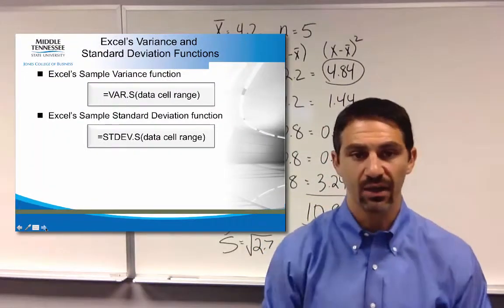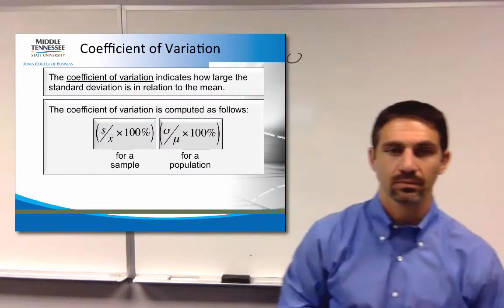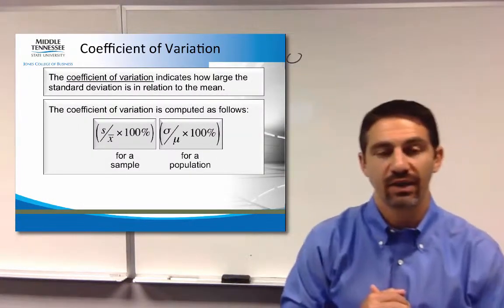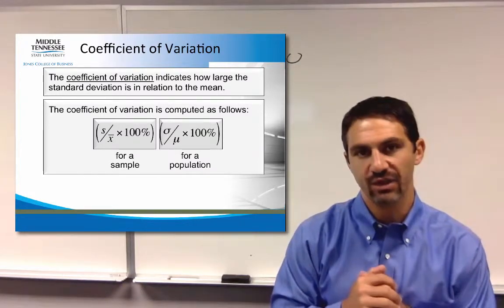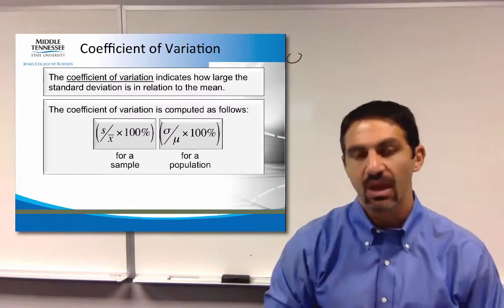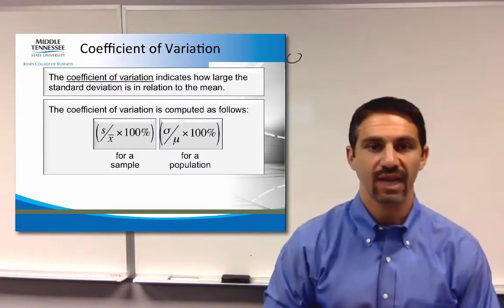So again, here are the different formulas. Another measurement of variation, more of a ratio, is just a coefficient of variation. And that's where you look at the standard deviation in comparison to the actual sample mean.